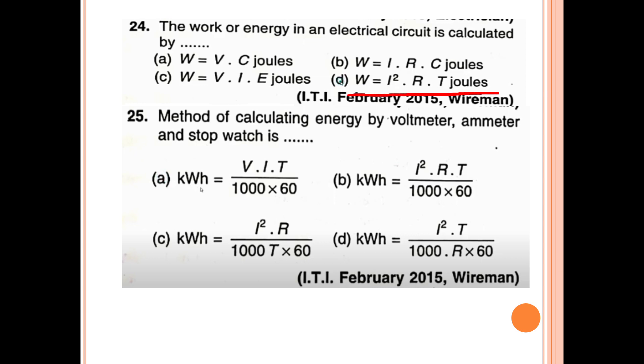Method of calculating energy using a voltmeter, ammeter, and stopwatch. The kilowatt power equals V into I into T divided by 1000 into 60.